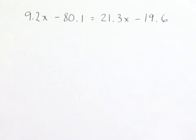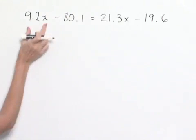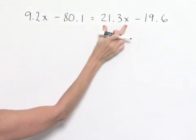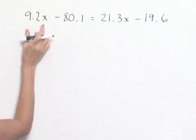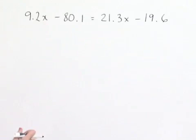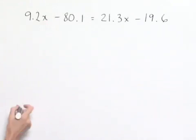We want to solve for x in the equation 9.2x minus 80.1 equals 21.3x minus 19.6. The first thing to note is that we have terms with x on both sides of the equation. So one thing we can do is subtract 9.2x from both sides in order to end up with our x terms on the same side.